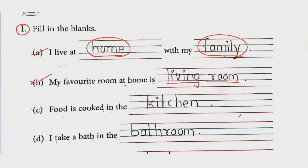See the third one: 'Food is cooked in the blank.' Khana hum log kaunsi room mein banaate hain? Rasoi ghar mein — it means kitchen mein. So food is cooked in the kitchen. Next one: 'I take bath in blank.' Aap log kahaan pe naate ho? Bathroom mein. So the answer is bathroom.